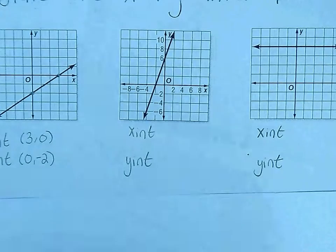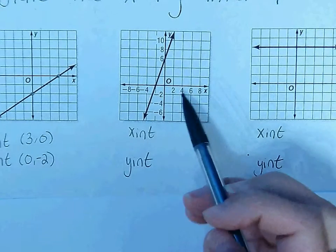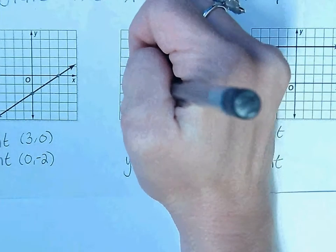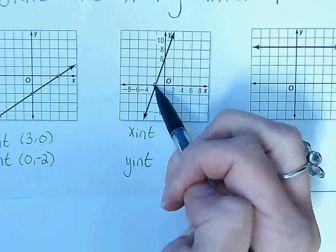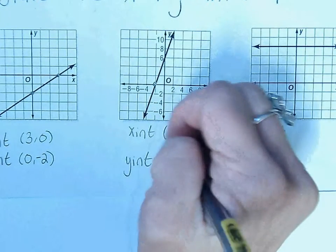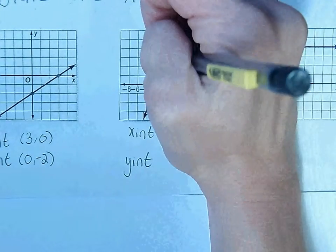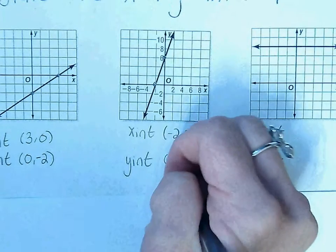For this graph, we have to notice that the axes are counting by 2s. So the x-intercept, where the line is touching the x-axis, is right here. And starting at the origin, we are going 2 to the left. So negative 2, 0. And the y-intercept is here. Nowhere left or right. And we're going to go up 6. So 0, 6.